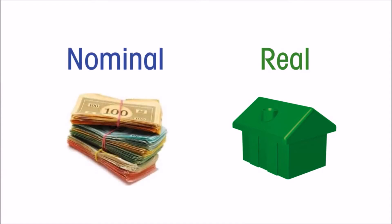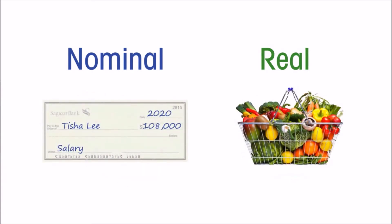A real asset delivers an actual service, like shelter, which is its actual value. A nominal asset only has exchange value — it only has value in terms of what we can exchange it for, and then derive a service from the thing we exchange it for. But nominal values can have their real equivalence.